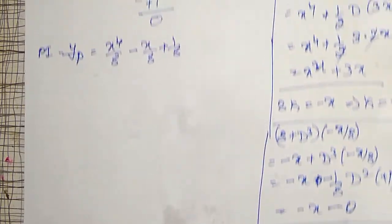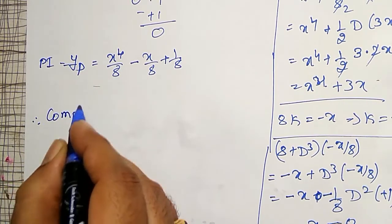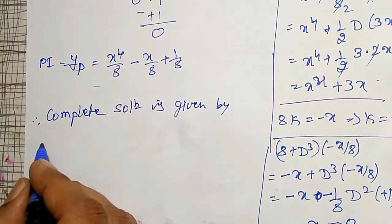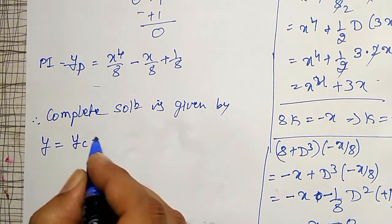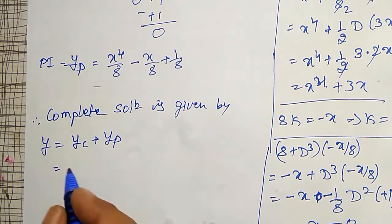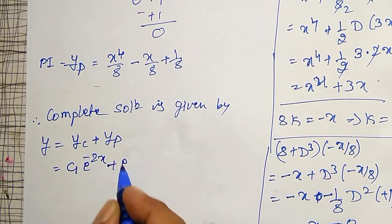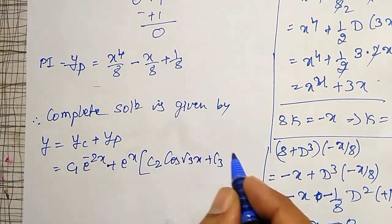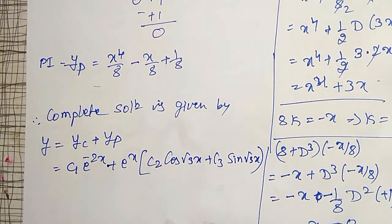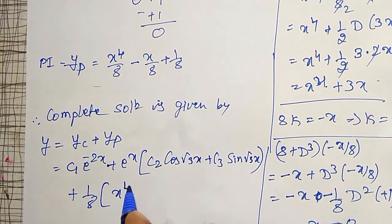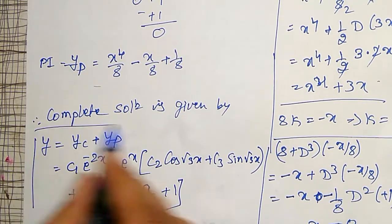The complete solution is given by y = yc + yp — the complementary function plus the particular integral. The complementary function is c₁e^(−2x) + e^x (c₂ cos(√3 x) + c₃ sin(√3 x)). Adding the particular integral, taking 1/8 as common: the complete solution is y = c₁e^(−2x) + e^x(c₂ cos(√3 x) + c₃ sin(√3 x)) + (1/8)(x⁴ − x + 1).